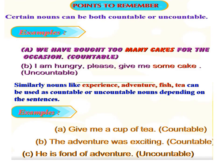Points to remember: certain nouns can be both countable and uncountable. There are some nouns which can sometimes be countable and sometimes uncountable. For example, A: 'We have bought too many cakes for the occasion' — that is countable. Example B: 'I am hungry, please give me some cake' — that is uncountable. So in example A, 'many cakes' is countable, while in example B, 'some cake' is used as uncountable.